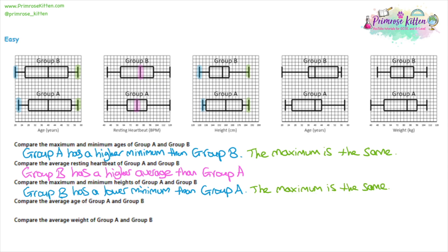Question four, we are comparing averages again. Highlight the median — the middle of the five lines. In group A and group B they are both at 40, so they both have the same average. We can say the average is the same in group A and group B, or more specifically, the median is the same in group A and group B.